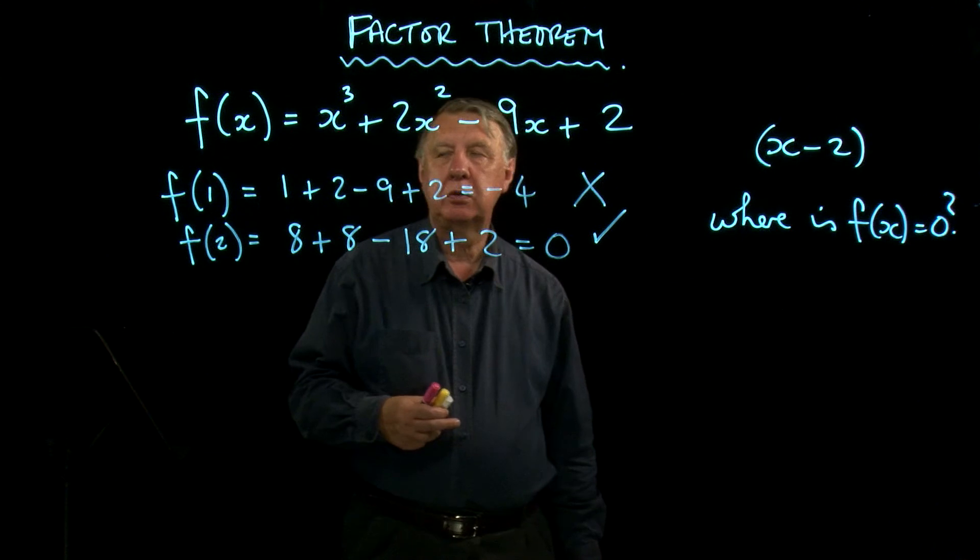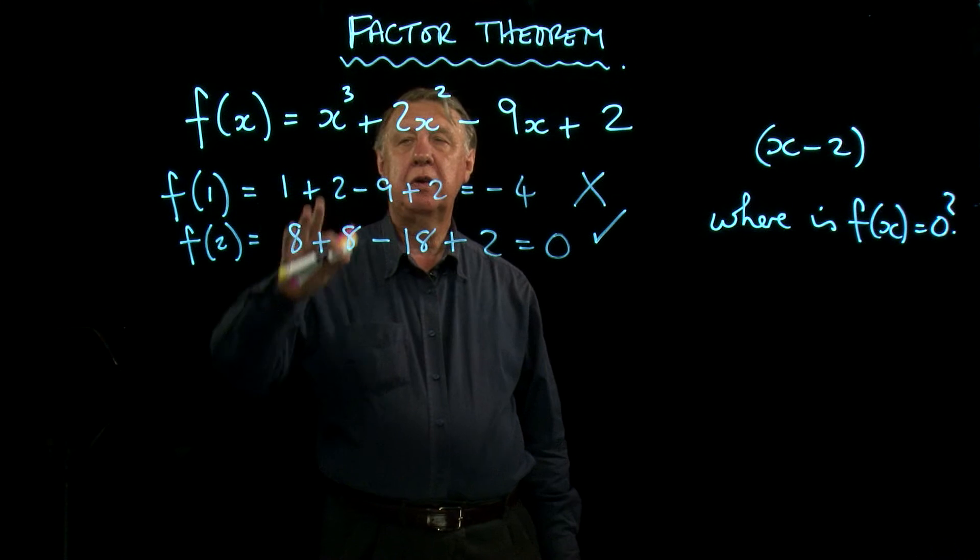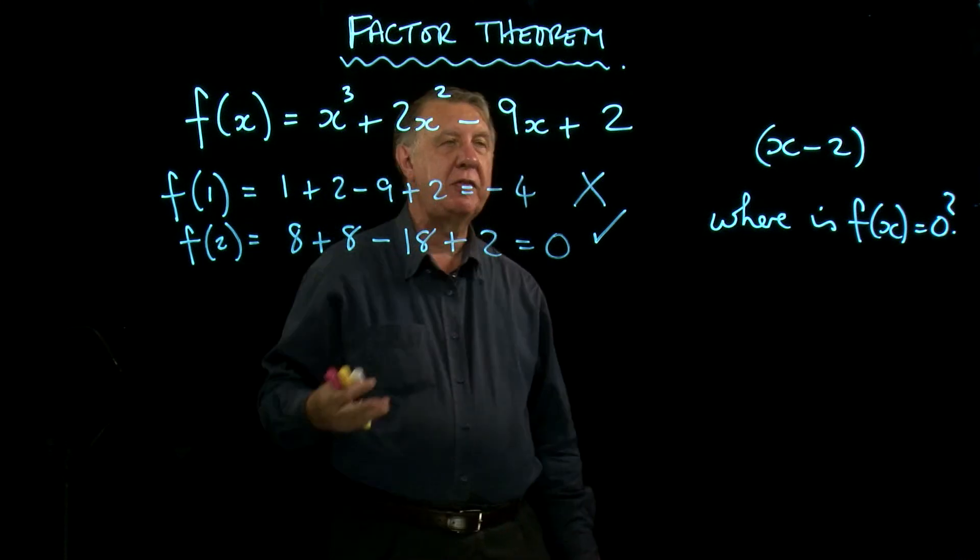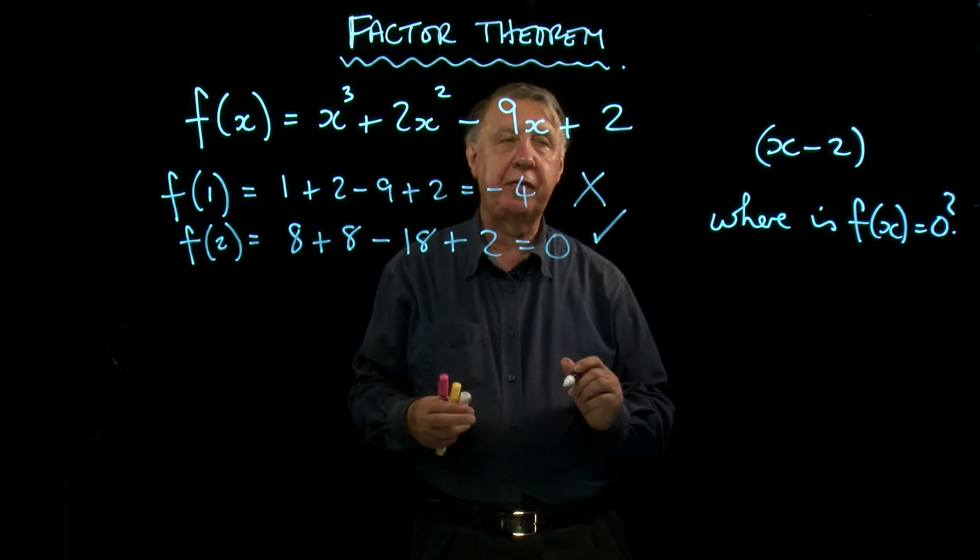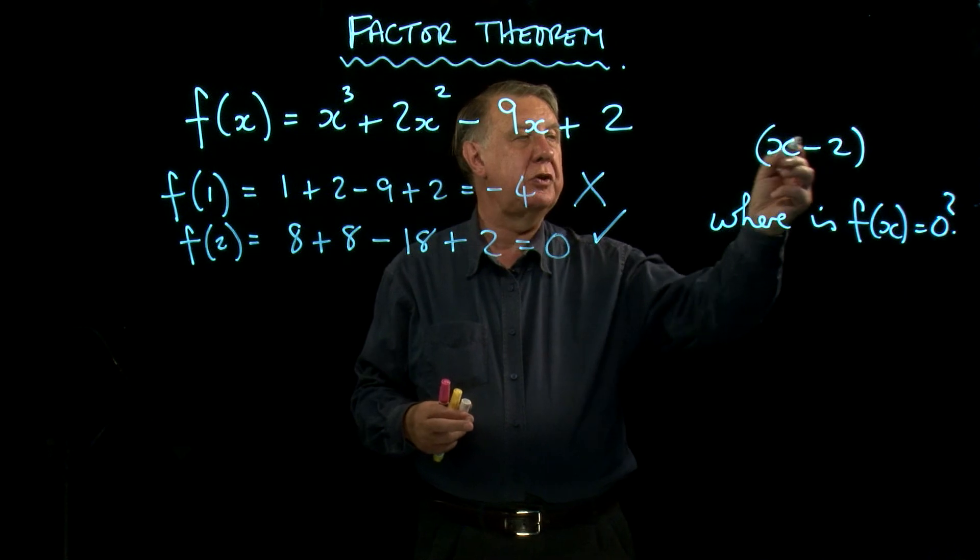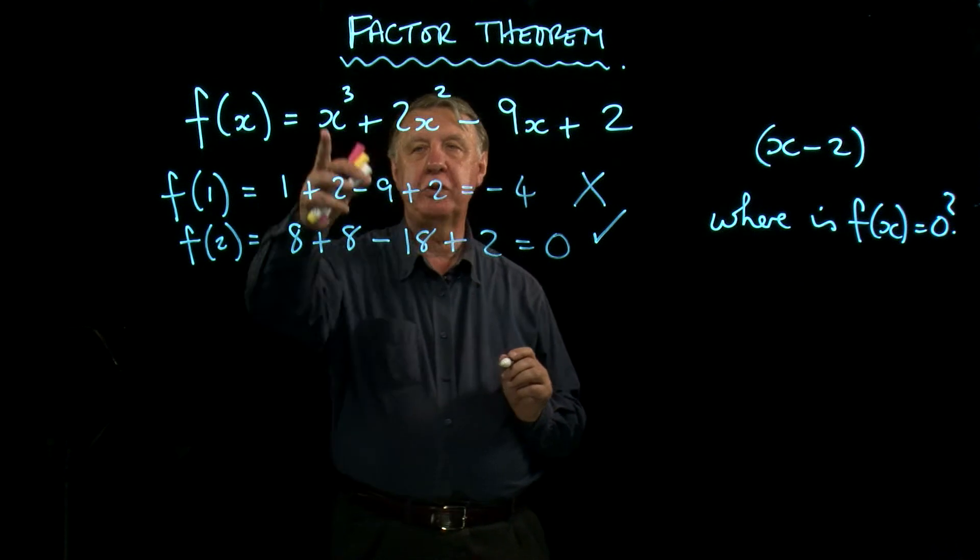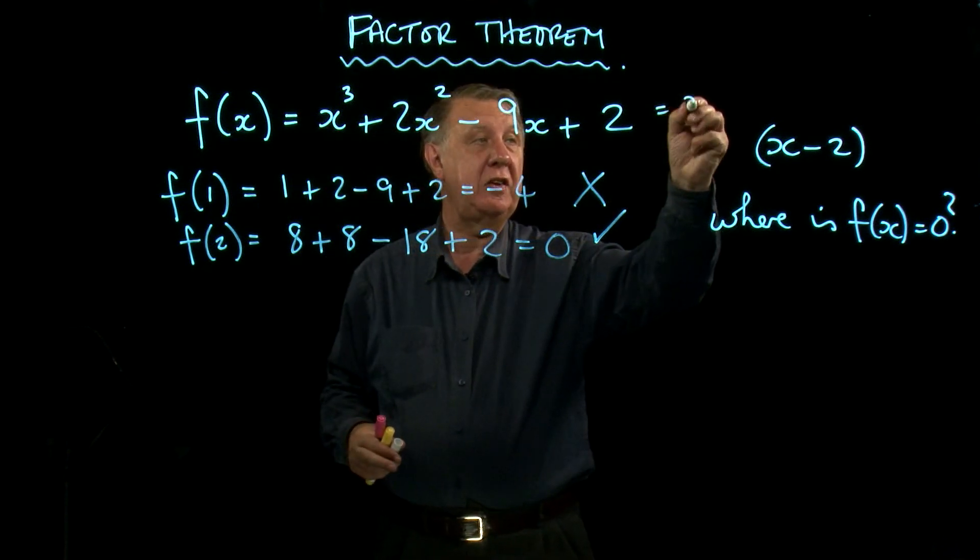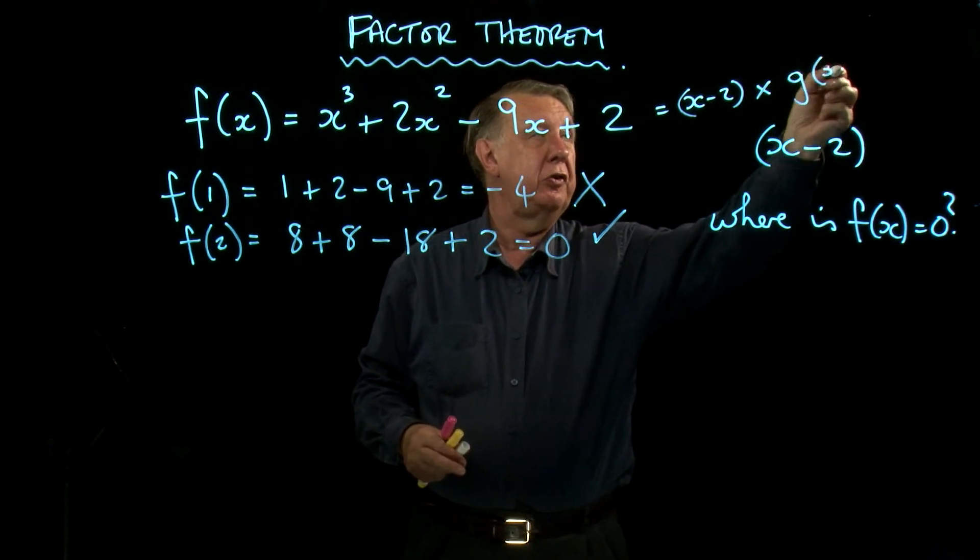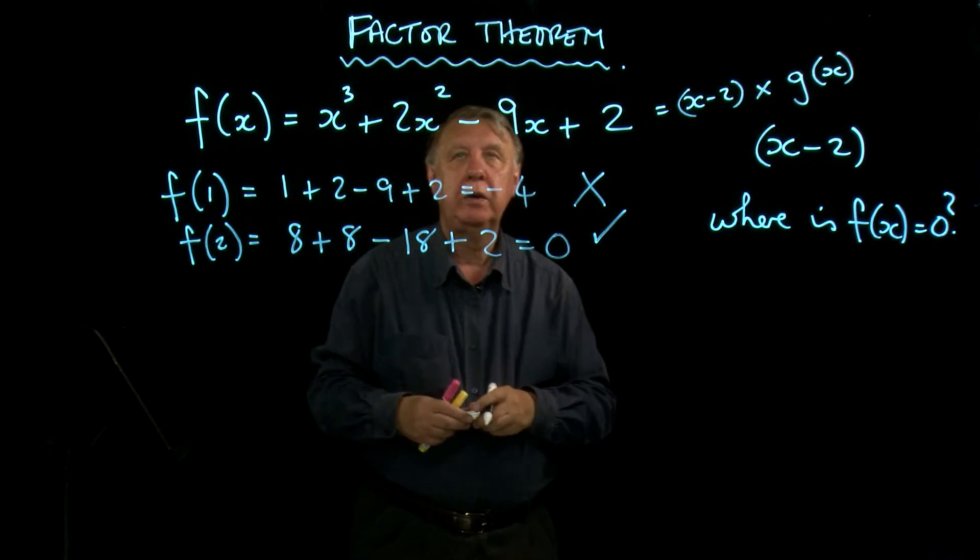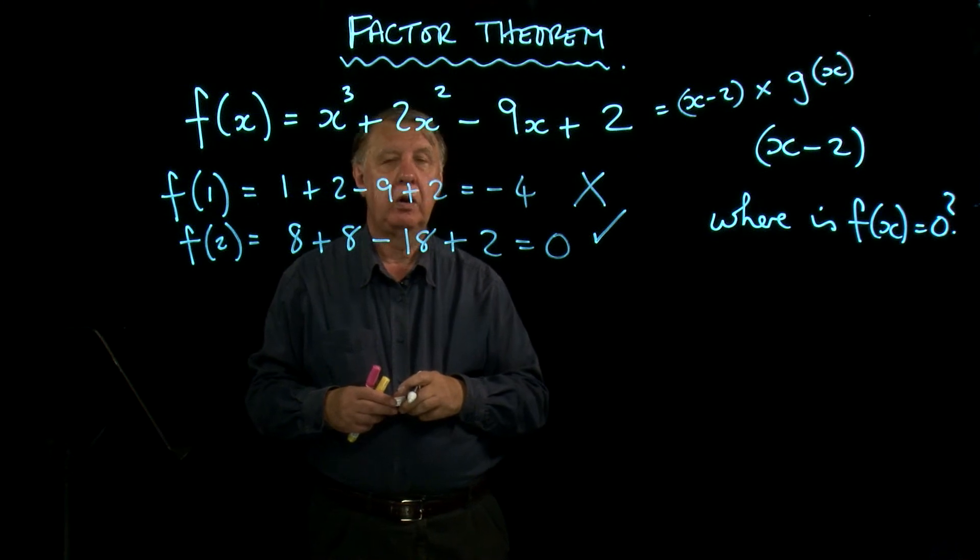If I put 2, I get 8 + 8 - 18 + 2, which is indeed 0. Well, that tells me quite a lot. Because the fact that f(2) = 0 means that if I were to factorize that, one of my factors must be x - 2. Because in order to make the function 0, if I put x = 2 here, 2 - 2 is 0. And so the whole expression would be 0, because I'm actually saying that this is x - 2 times something, some function. And that would enable me to do that factorizing.